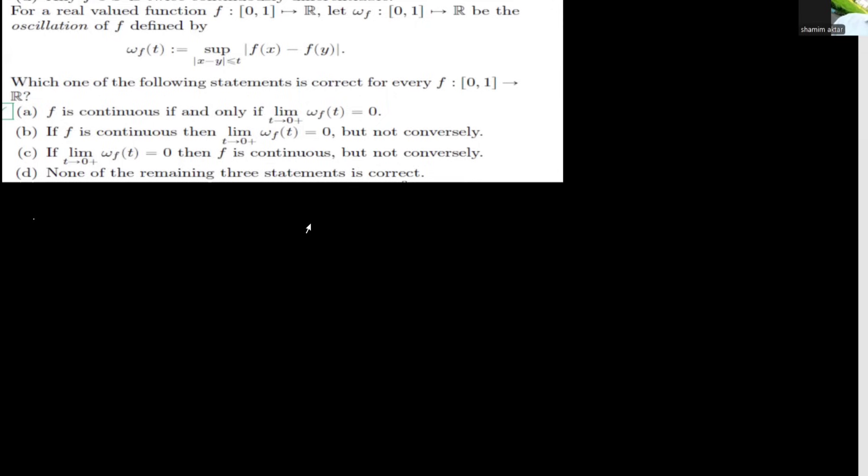Which one of the following statements is correct? Statement 1: f is continuous if and only if wf(t) tends to 0 as t tends to 0+. Statement 2: if f is continuous then wf(t) tends to 0 but not conversely. Statement 3: if the limit of wf(t) as t→0 is 0, then f is continuous but not conversely. Statement 4: none of the remaining three statements is correct. Now, solution.